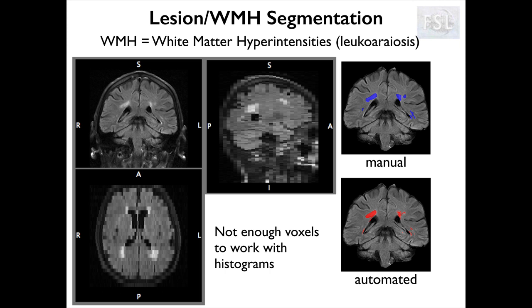They are very common in the aging brain and are often considered benign, but they have also been associated with an increased risk of stroke and of developing dementia. So we would like to detect, segment, and quantify them automatically. To do this we cannot use the same approach as FAST, because the number of voxels that are hyperintense are usually not enough to appear as a separate peak in the histogram, so we will need to use a different method.